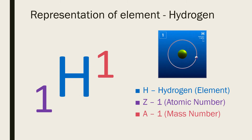Now let us look into the representation of the element hydrogen. The symbol of hydrogen is H. Its atomic number is 1. There is only 1 electron revolving around the nucleus and only 1 proton is present inside the nucleus. So its atomic number is 1. The mass number is also 1 because there are no neutrons in hydrogen. So it is represented as atomic number 1 and mass number 1.